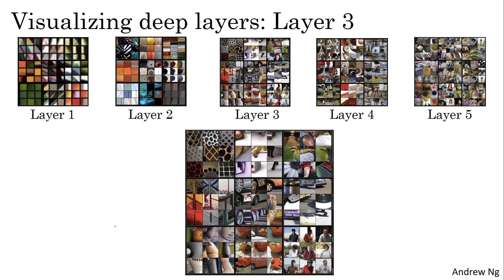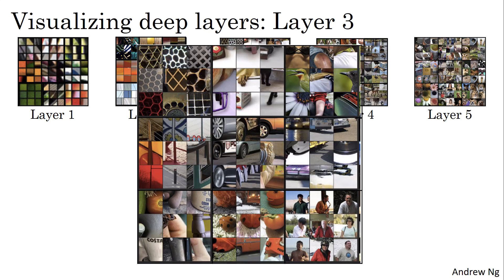How about layer three? Zooming in even bigger, this is what maximally activates layer three units. It looks like there's a hidden unit that responds highly to a rounded shape in the lower-left portion of the image, which ends up detecting a lot of cars. One unit looks like it's starting to detect people. Another seems to detect certain textures like honeycomb or square shapes — a regular texture pattern. Some of these are difficult to manually interpret, but it's clearly starting to detect more complex patterns.